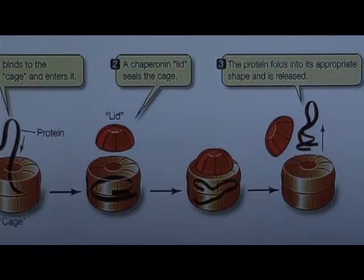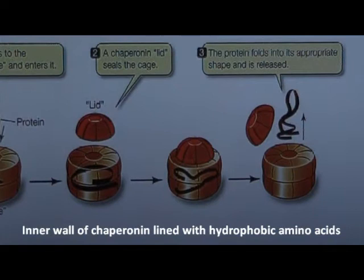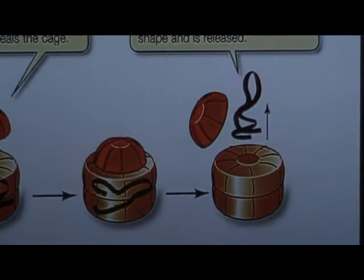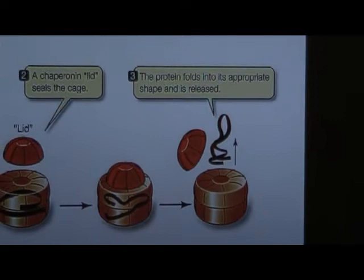Whilst concealed within the chaperonin, an ideal environment is created away from the watery cytosol and other proteins which may interfere with the folding procedure. The inner wall of the chaperonin is lined with hydrophobic amino acids, which interact with the hydrophobic region of the polypeptide chain and stabilize it, giving it a chance to fold. Once the correct folding has occurred, the cap is removed and the protein, in its native state, is released.